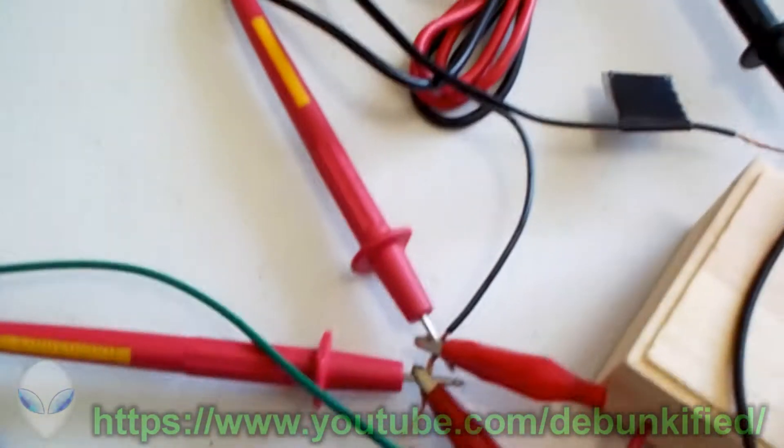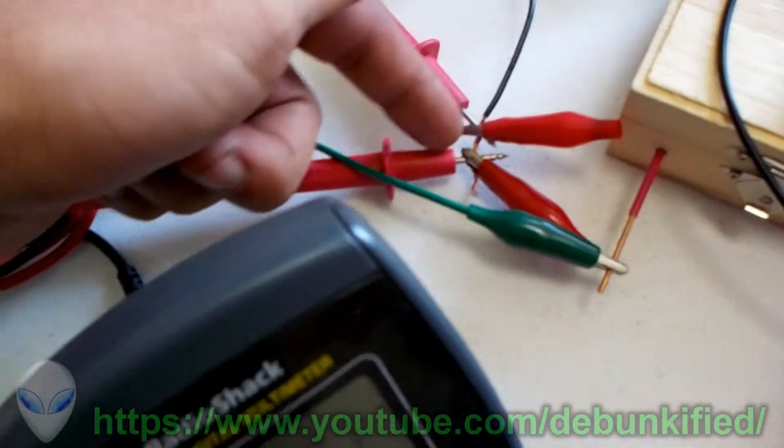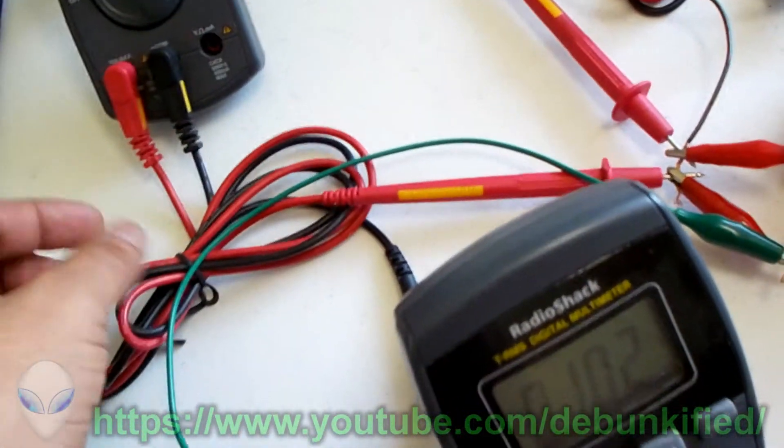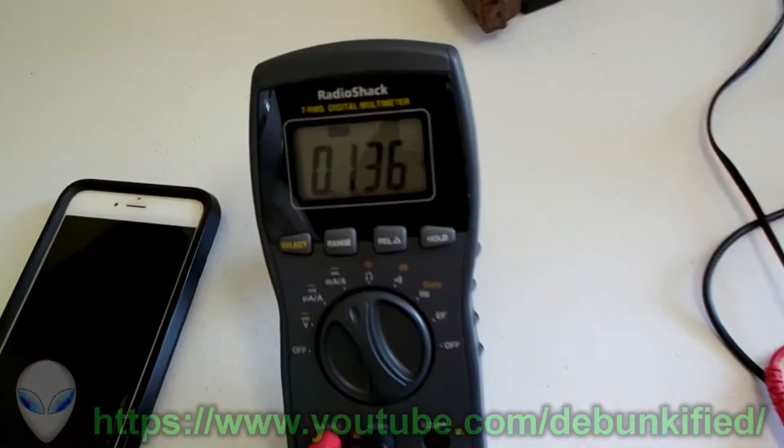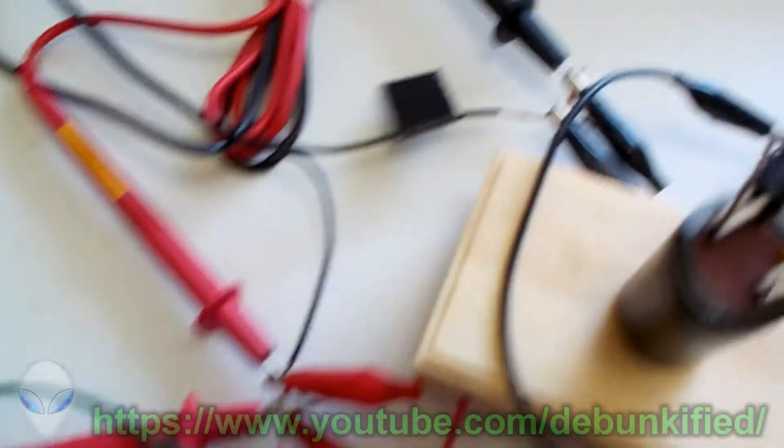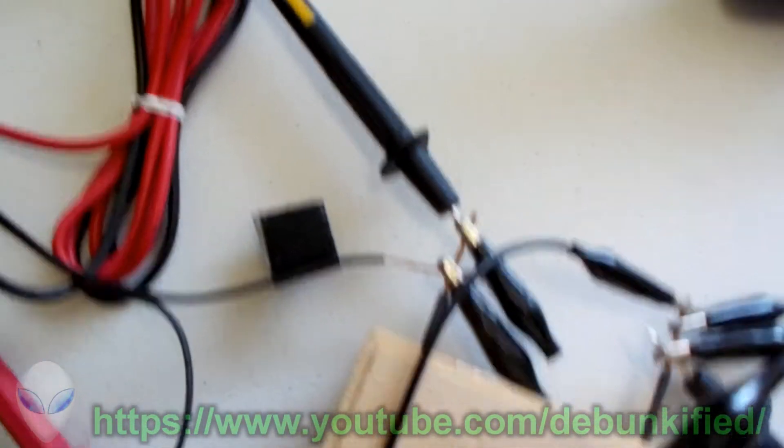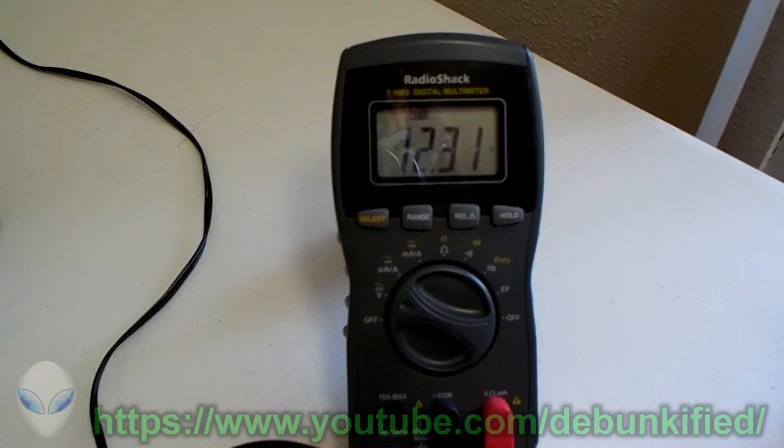So this is the setup, everything's right here. Measuring input current right here on the positive side, this is the negative side. That's the voltage on the input.